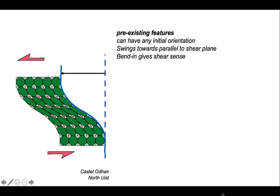And it's been deflected over to the left, in and out of the shear zone. So we can use the bending of the pre-existing marker to derive the shear sense of our shear zone.